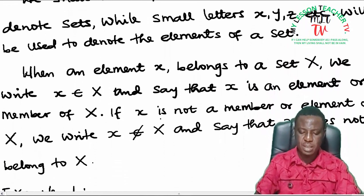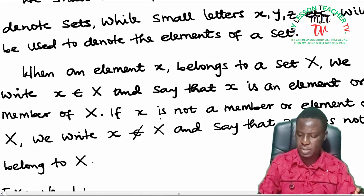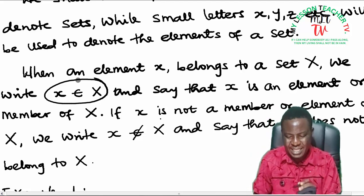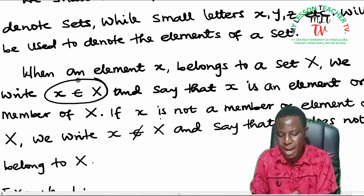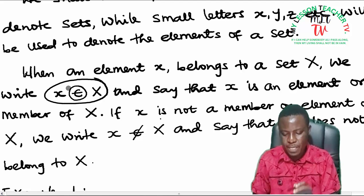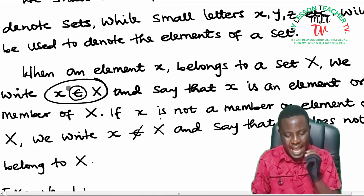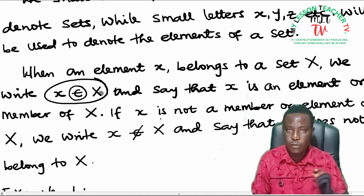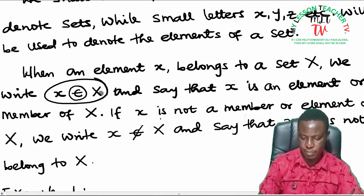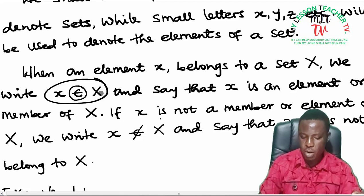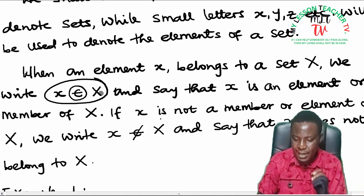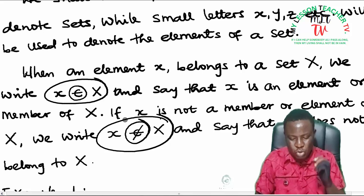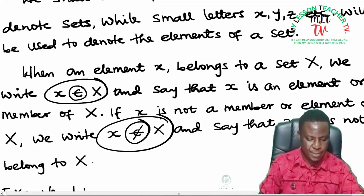When an element x belongs to a set X, we write it as this and say that x is an element or a member of set X. So this denotes or this can be said to represent an element of, telling you that small letter x is an element of the set bigger X. If x is not a member or an element of big capital X, we write it as this. We read it as x does not belong to the set capital X.